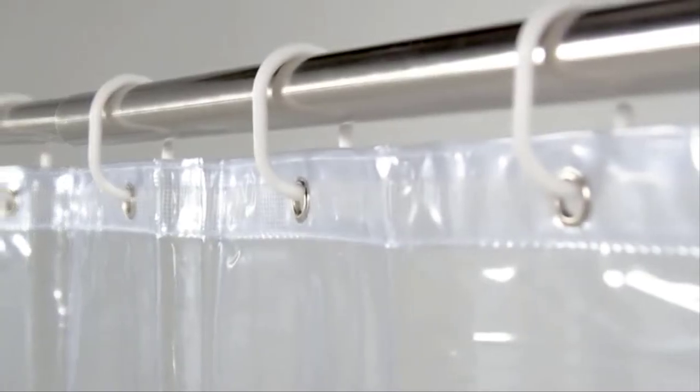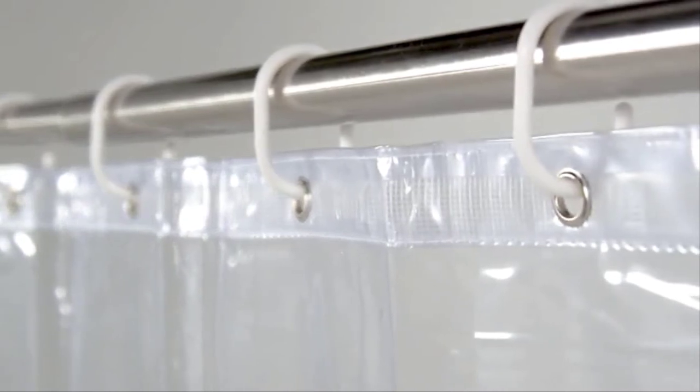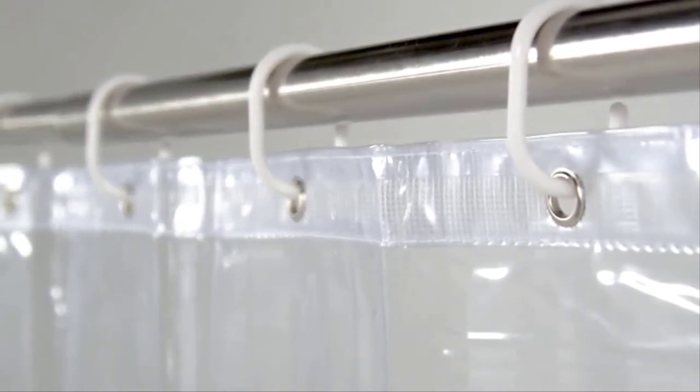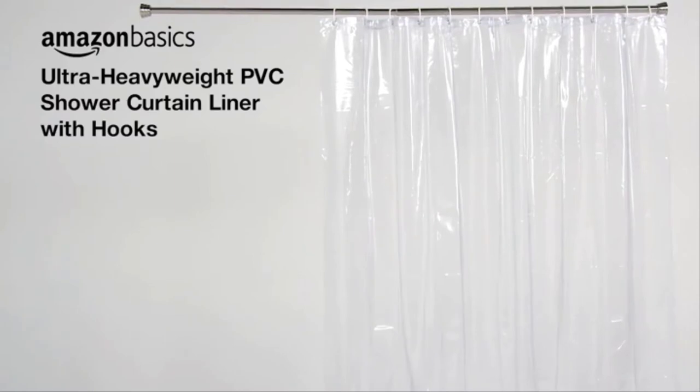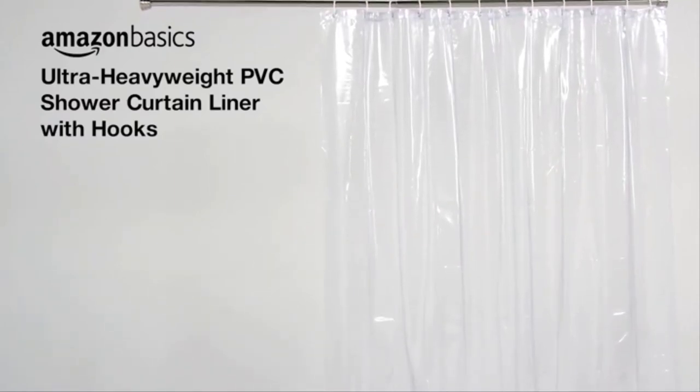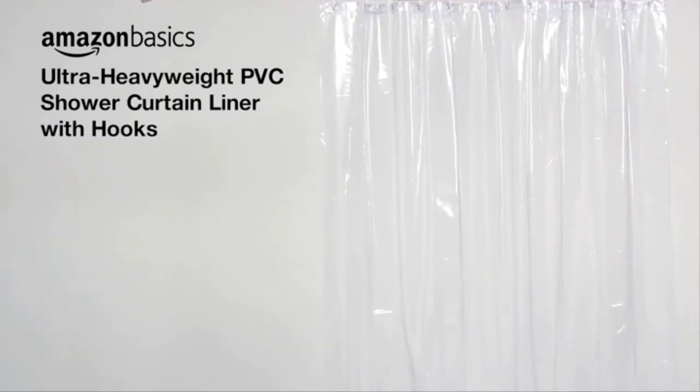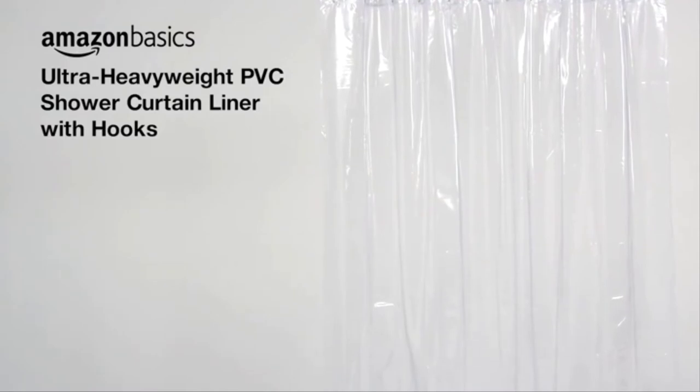It also has a reinforced mesh top header and 12 rust-proof metal grommets for added strength. You're sure to have many pleasant showers with the AmazonBasics Ultra Heavyweight PVC Shower Curtain Liner with Hooks.